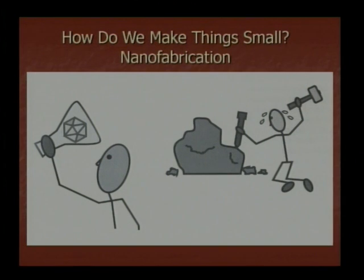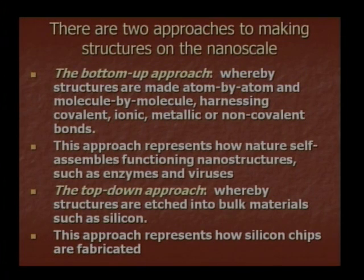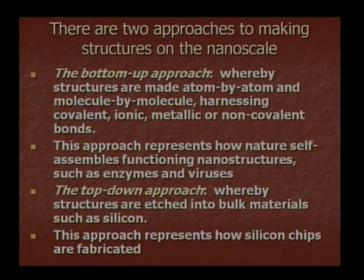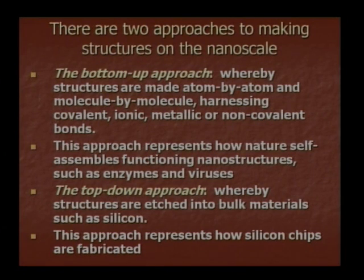Now how do we make things small? There are two methods: bottom-up and top-down. The bottom-up approach whereby structures are made atom by atom — nano-atom ne select kari ane ena par atom by atom structure banavi shakhe chhe — by molecule, harnessing covalent, ionic, metallic and non-covalent bonds.